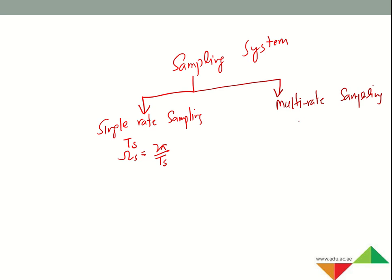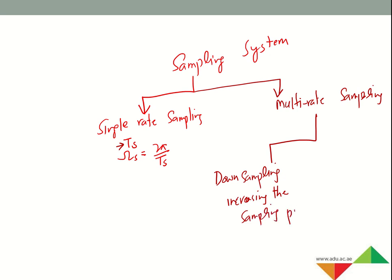Multi-rate sampling has two branches. One is down sampling — for example, you have a fixed sampling rate and you want to decrease the number of samples, taking fewer samples. So we are actually increasing the sampling period. In down sampling, we want fewer samples, so we will be increasing the sampling period. If we have a sampling period of T, we will increase that by a factor of M.